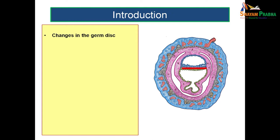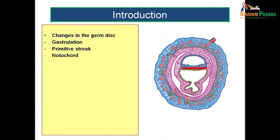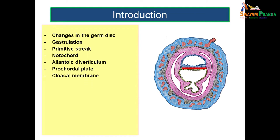In this session, we will be seeing the changes happening in the germ disc under the following headings: changes in the trophoblasts, gastrulation, the formation of primitive streak, the formation of notochord, the formation of allantoic diverticulum, the formation of procordal plate, the cloacal membrane — how it is formed and what is its fate — and pericardial bar.